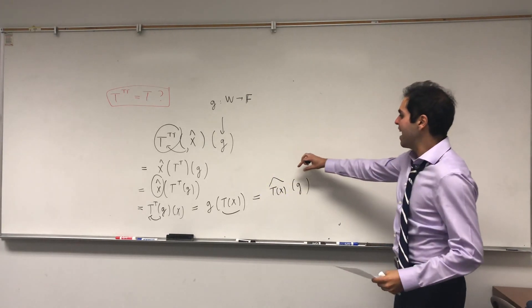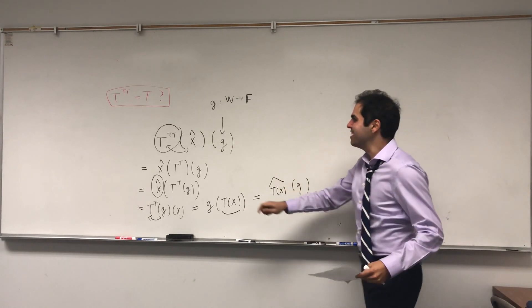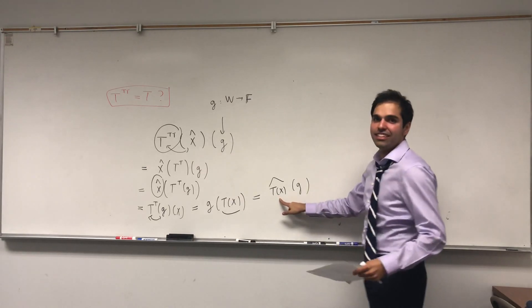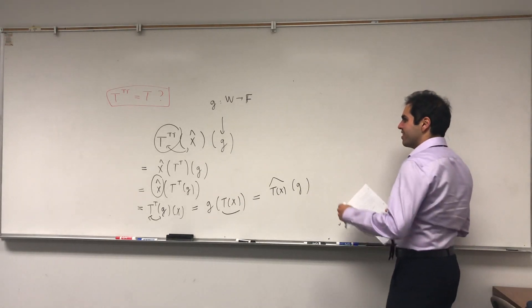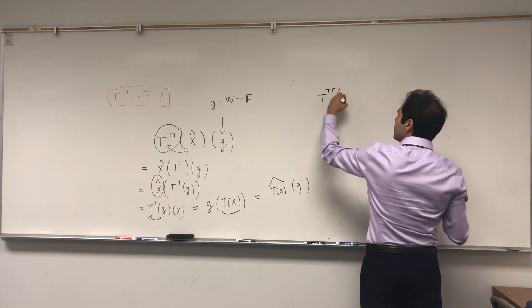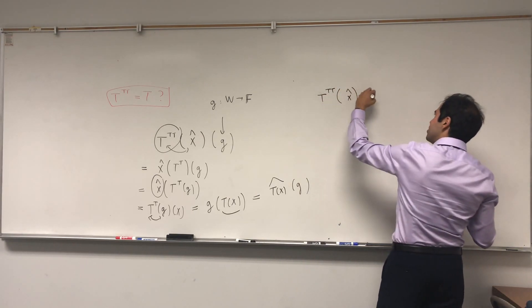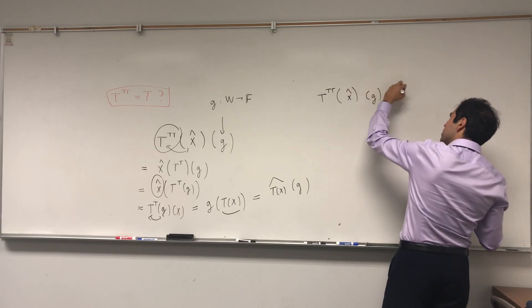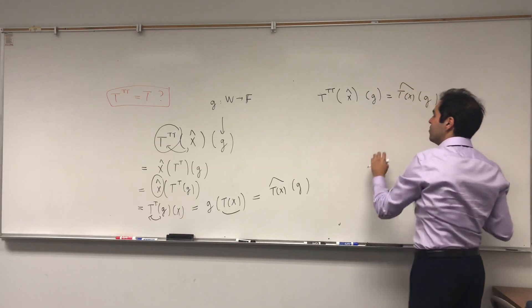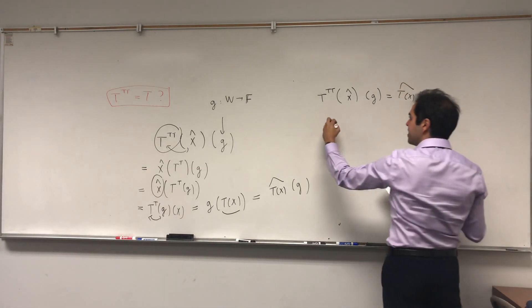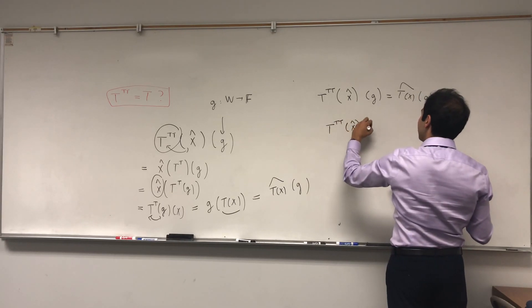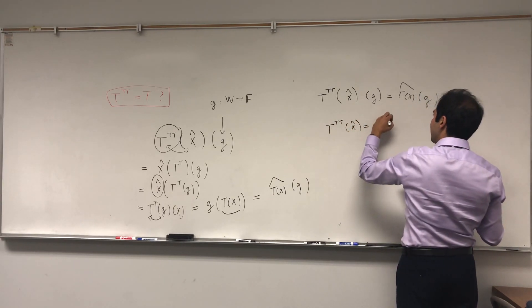Notice what we do. We have this function G and evaluate it at T of X. Because you have an evaluation thing, this actually equals T of X hat of G. Those are technically two different hats. This is the hat in V, this is the hat in W, but we can think of them as being the same thing. What have we shown? T transpose transpose of X hat of G equals T of X hat of G. But because G is arbitrary, we really get T transpose transpose of X hat equals T of X hat.